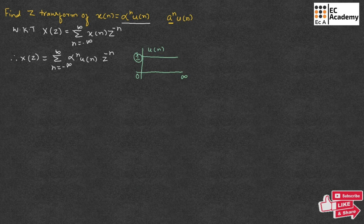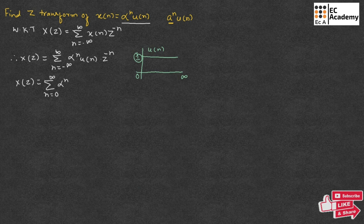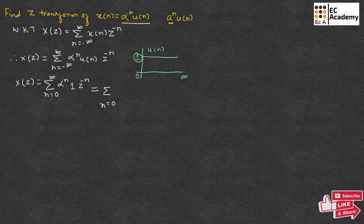Since u[n] = 0 from minus infinity to 0, we can write X(z) = summation from n = 0 to infinity of alpha^n times 1 times z^(−n). So we can write this as summation from n = 0 to infinity of alpha^n times z^(−n).